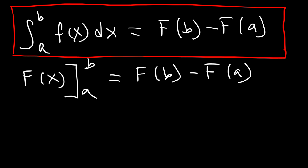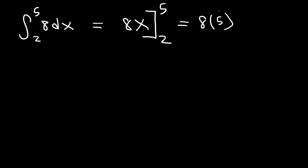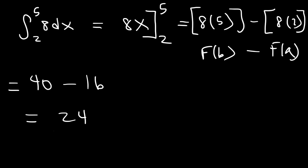Let's start with a simple problem: evaluate ∫8 dx from 2 to 5. First we need to find the antiderivative of 8. The antiderivative of 8 is 8x, because the derivative of 8x is 8. We evaluate it from 2 to 5. First we replace x with 5 — this represents F of b, or F(5) — and then we replace x with 2 for F of a. 8 times 5 is 40, and 8 times 2 is 16. 40 minus 16 is 24.